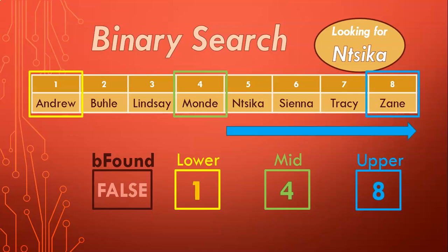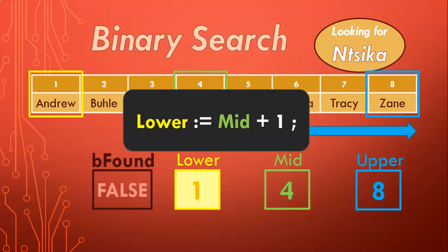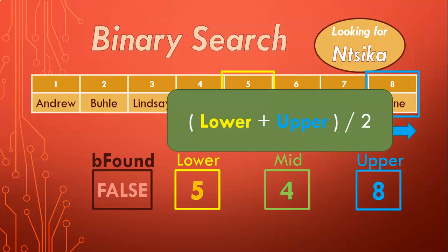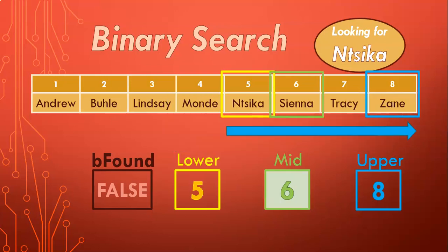Once we know we're looking to the right side, our upper limit is fine, but we shift the lower limit to one after the midpoint — midpoint plus one. So four plus one gives us five, and our new lower value is position five. Now we recalculate our midpoint: lower plus upper is five plus eight, which is thirteen. Thirteen div two — two goes into thirteen six times — so position six is our new midpoint.